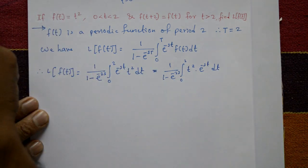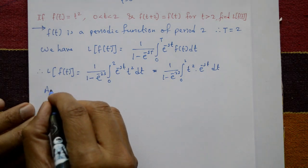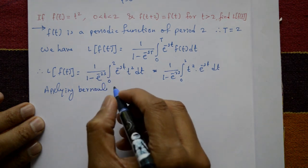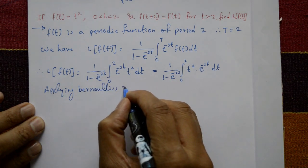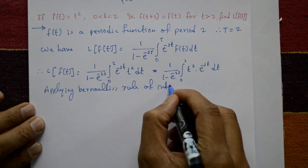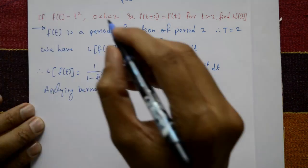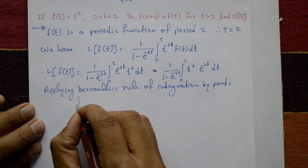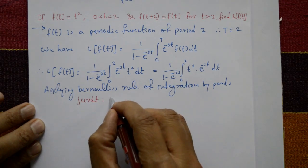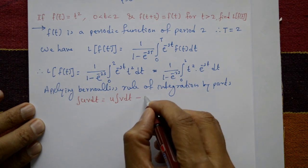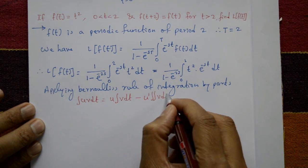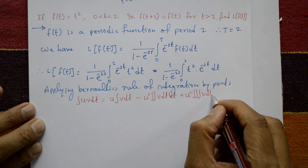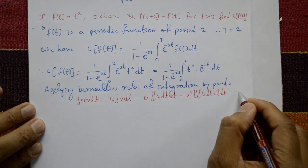Now applying Bernoulli's rule of integration, which is integration by parts. The integration by parts formula is: integral of u·v dt equals u times integral of v dt, minus u-dash times integral of integral of v dt dt, plus u-double-dash times the triple integral of v dt dt dt, and so on.